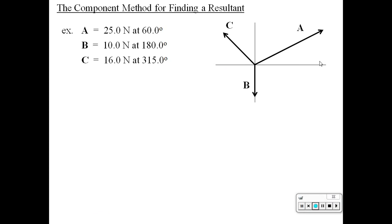Remember, 0 degrees is north, 90 degrees is east, 180 is south, and 270 is west. So A is going at 60 degrees, B is 180, and C is 315.